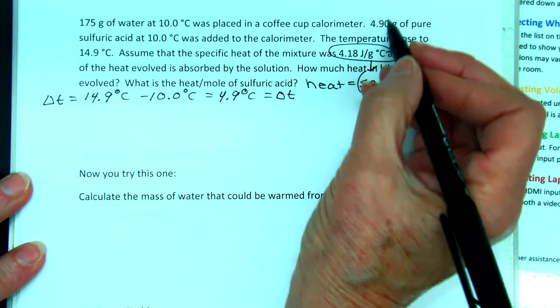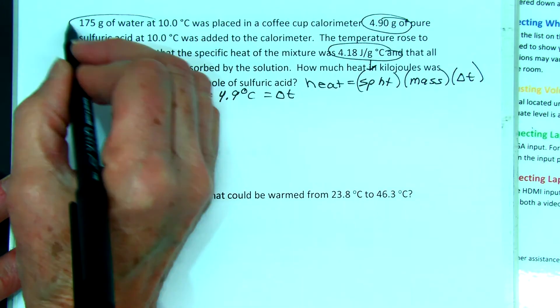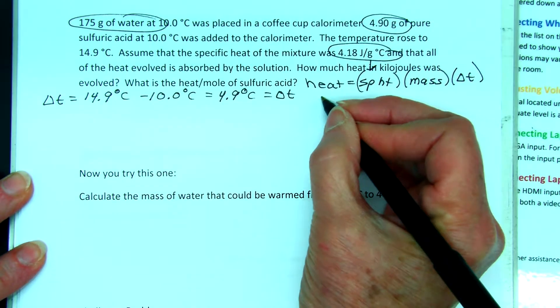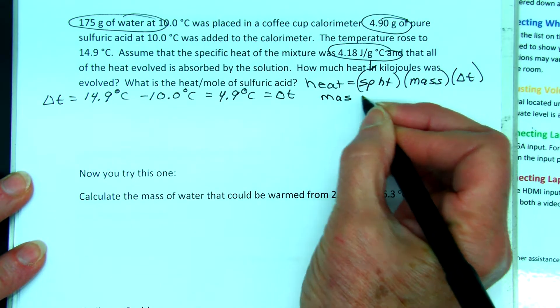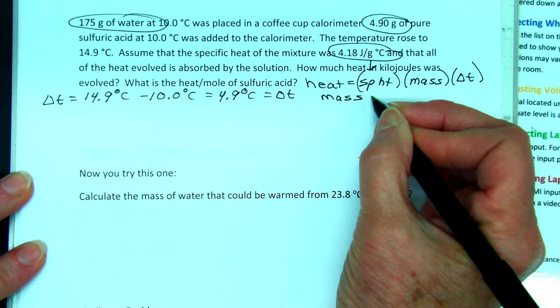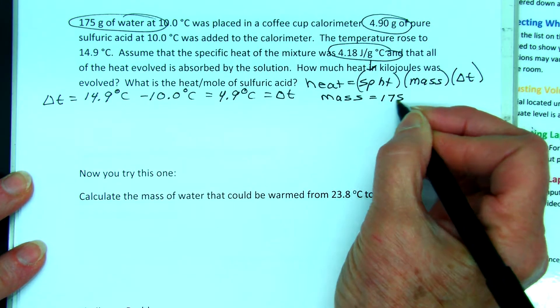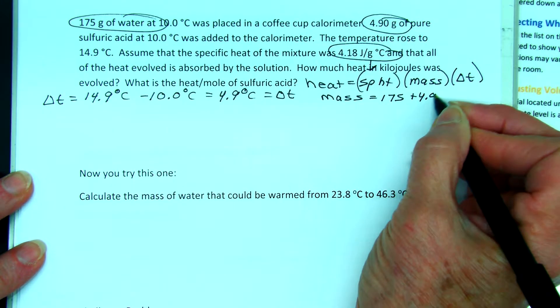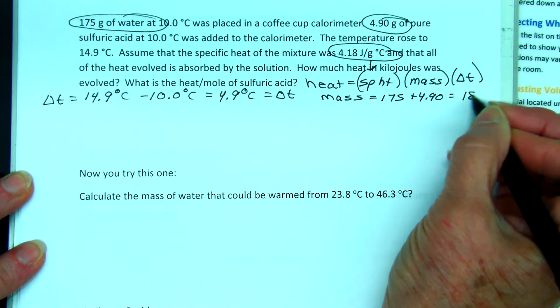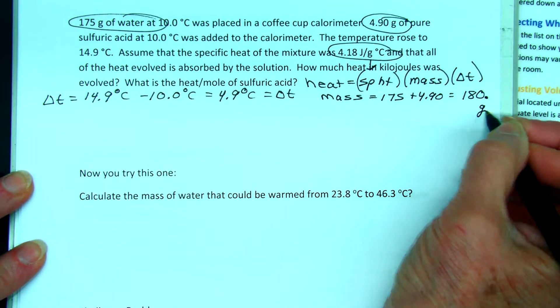We have to deal with the total mass because everything got heated up. So it's 175 plus 4.90 gives us 180 grams with three sig figs.